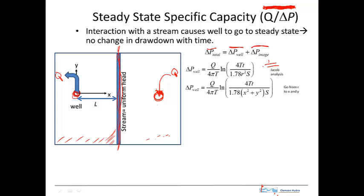To implement this, we rewrite the Jacob analysis in terms of x and y coordinates, with the origin at the pumping well. We recognize that radial distance r² equals x² + y² by the Pythagorean theorem. We substitute that in and get the Cartesian version of the Jacob equation. That is the pumping well contribution.